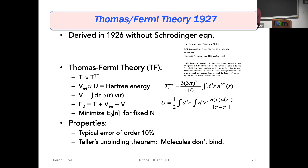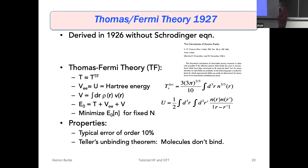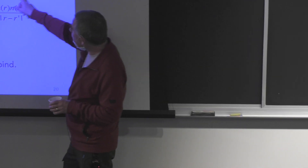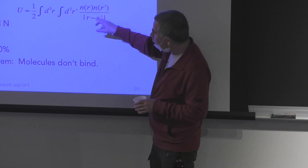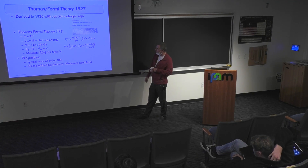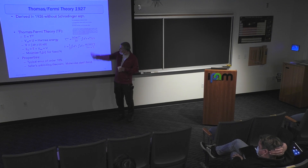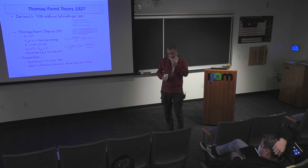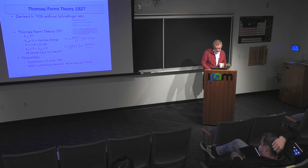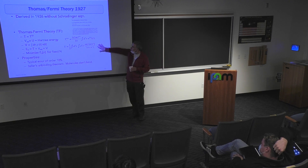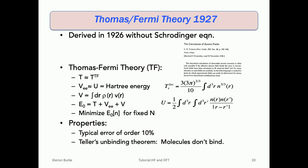DFT actually starts with Thomas-Fermi theory, 1927. Both Thomas and Fermi independently wrote down the same theory based on the density, writing down approximate functionals for the kinetic energy and the Hartree energy, and then minimizing with respect to the density. You get answers of the order of 10% accuracy — remember, Hartree-Fock was within 1%. But Edward Teller proved that in this theory, molecules don't bind, which really makes it hard to get a job in a chemistry department. This theory was nonetheless used for all materials calculations until about 1950.